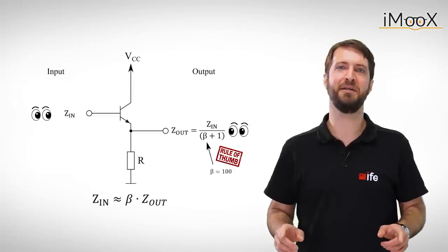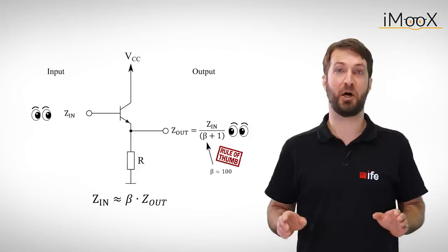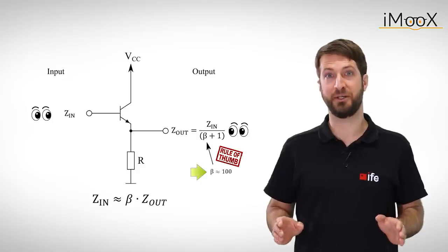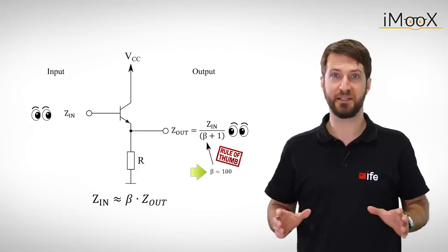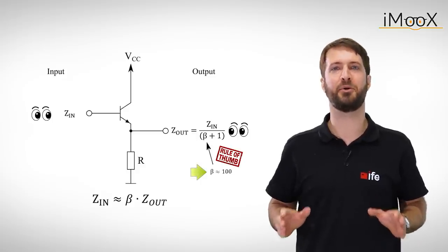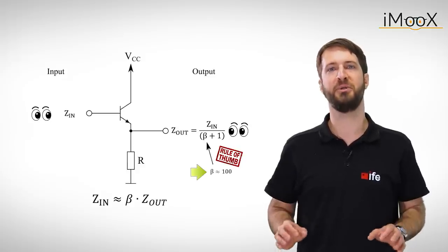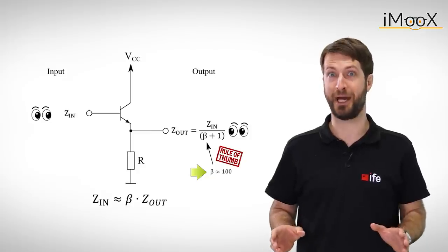It even does better, since the output impedance is about beta times smaller than the input impedance. Remember that beta is approximately 100. This allows a weak input signal source to drive a load at the output of the follower, which it would not be able to drive by itself. Seems pretty useful, right?